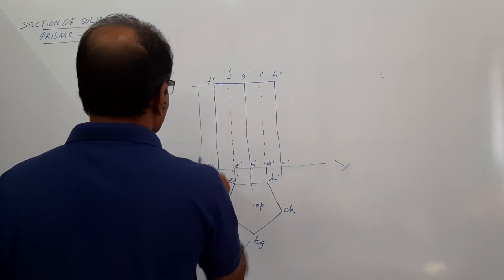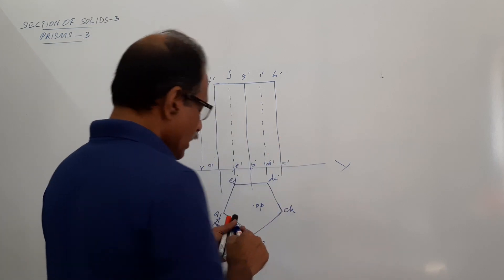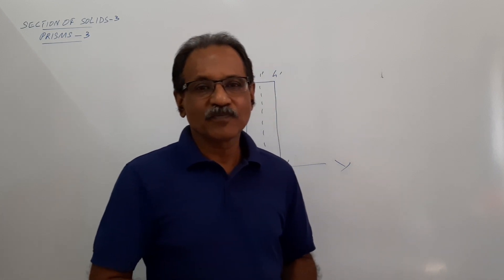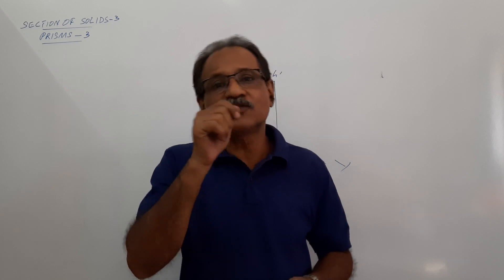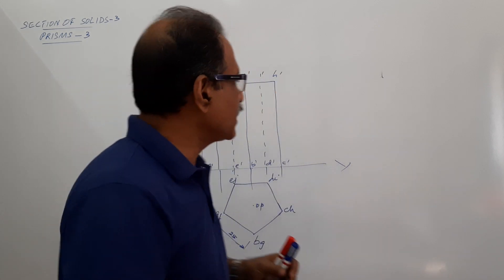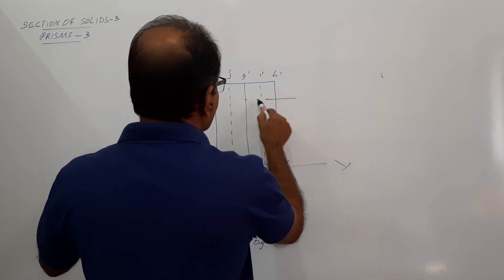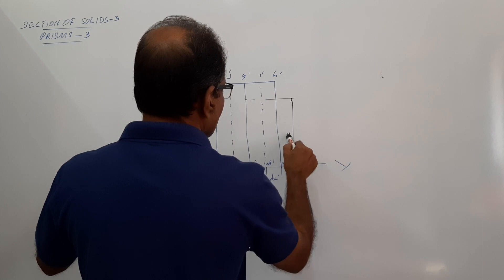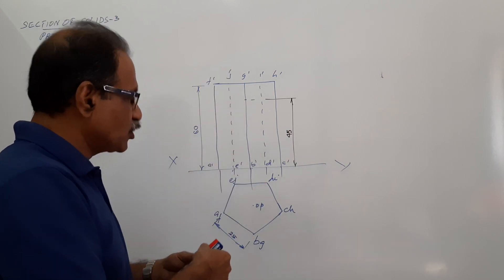The cutting plane makes 40 degrees to HP, perpendicular to VP and passing through a point on the axis 45 mm above the base. So locate the point on the axis 45 mm above the base — it comes here. The cutting plane passes through this point and it also makes 40 degrees to HP.